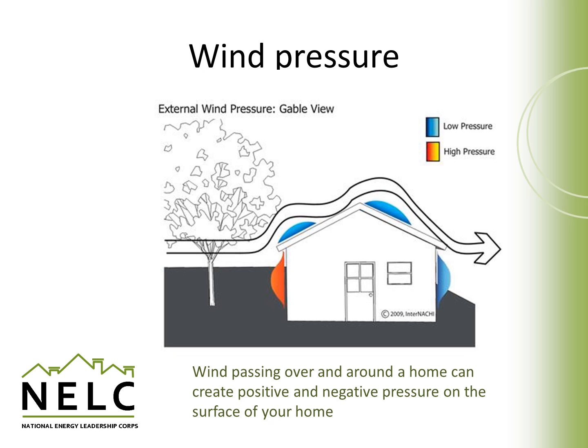Something that tends to be less visible and that we might not think about as much is the effect of wind passing over a house, because in the process it can create positive and negative pressures over the surfaces of homes that can also amplify heat loss or unwanted infiltration. In this picture, the red surface indicates a place where high pressures would exist in this wind, and at that source of high pressure, unwanted outside air could be forced into a house.